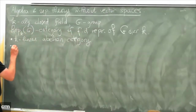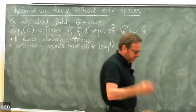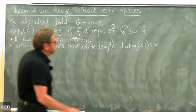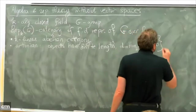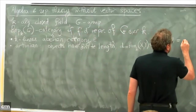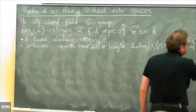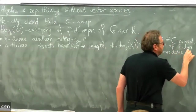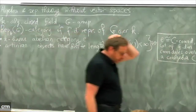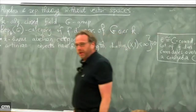Another property is that it is artinian, which means that objects have finite length — there is a finite filtration such that successive quotients are simple — and Hom spaces are finite dimensional. Together, these properties are equivalent to saying that my category c is equivalent to c-comod, the category of finite-dimensional comodules over a coalgebra c. This coalgebra is not unique, but you can require it to be pointed, meaning every simple comodule is one-dimensional, and in that case it is unique.